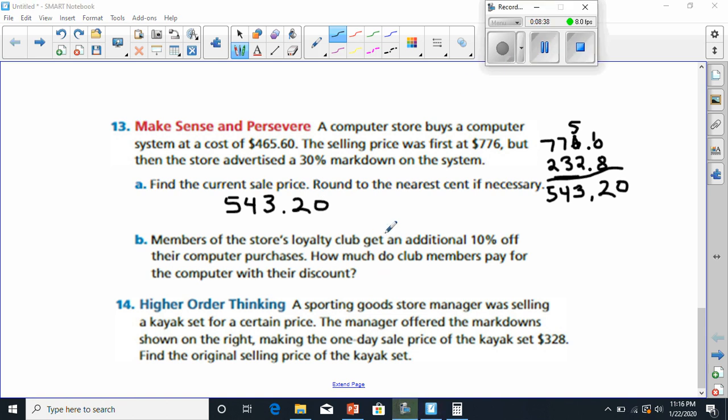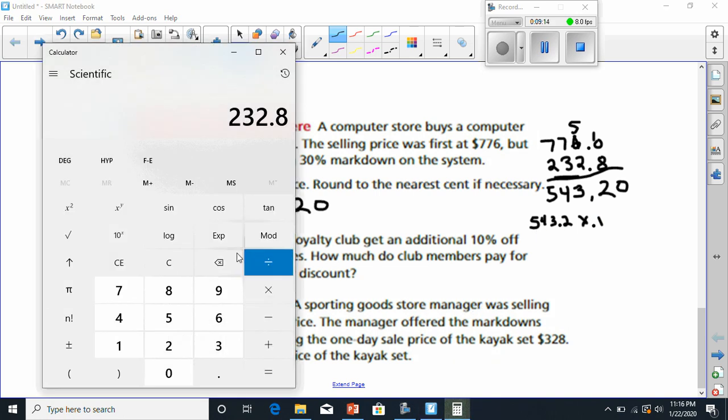Now it says that the members at the loyalty club get another 10% off from the purchases. How much do the members get? Well, this is going to be basically an additional 10%, so it'd be 543.20. We're going to multiply it. Let's see, an additional 10%, so this would be times 10%. The decimal moves back twice to be 0.1.